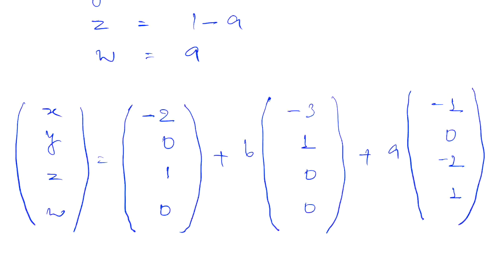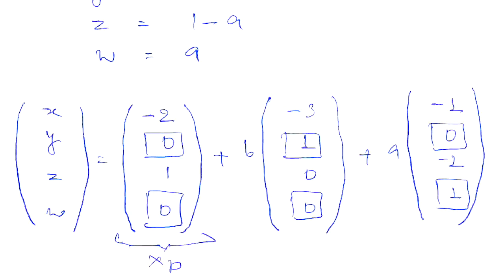Now let's try to write the solution in vector form. For that, we will write the solution x, y, z, w in a row, and the solution will look like this. Now observe the entries corresponding to free variables. In the particular solution, the free variables are 0, while in the corresponding homogeneous system of linear equations, the solution of homogeneous linear equation x0, we can see that free variables are taking 1, 0, 0, 1 values.